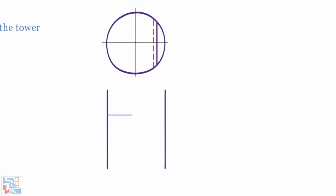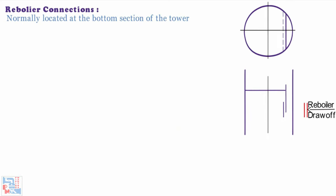Next is Reboiler connection. Reboiler connections are normally located at the bottom section of the tower. Figure shows Reboiler draw off connections for single flow tray. This connection can be very important for arranging tray orientation.